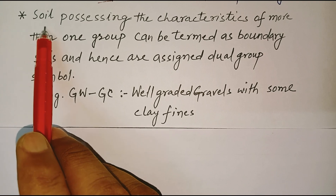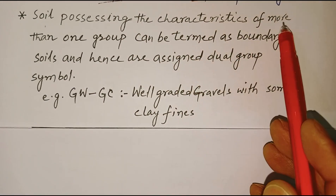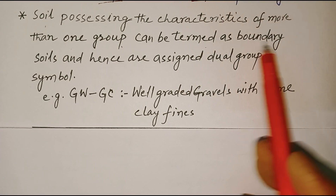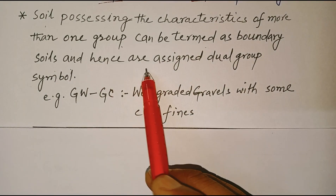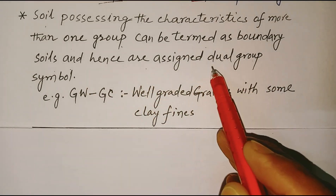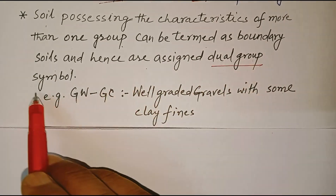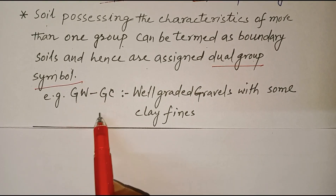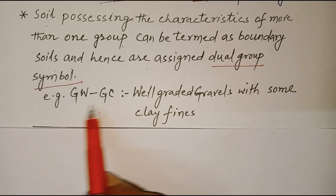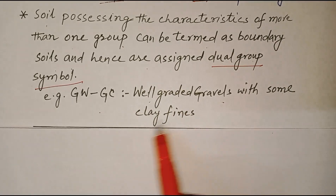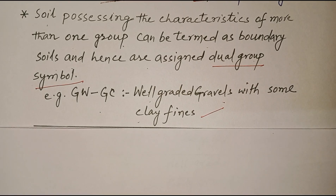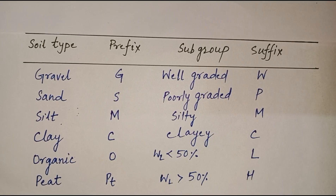According to the USCS classification system, soils possessing the characteristics of more than one group can be termed as boundary soils and are hence assigned a dual group symbol. For example, if we have symbols like GW-GC, it means this is well graded gravel with some clay fines.